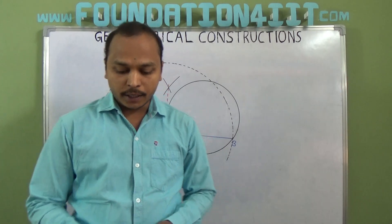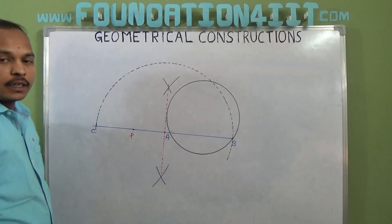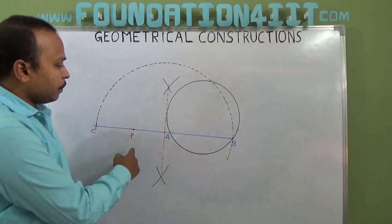Now from the P, this is the point P. At point P only we need to draw two external tangents, so we just draw a perpendicular at the position of P.